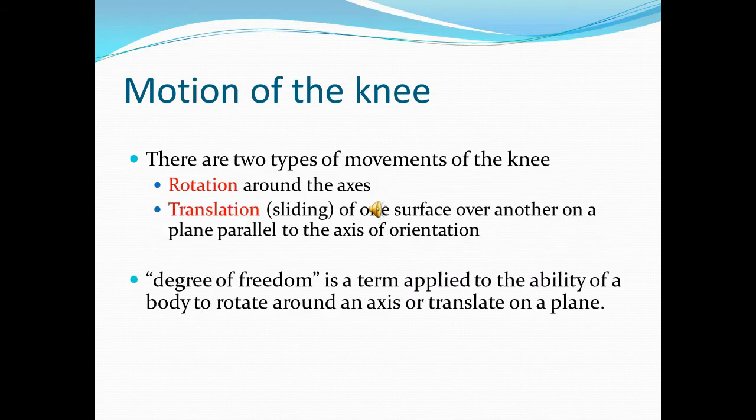There are two types of movements of the knee: rotation around the axis, and translation, or sliding of one surface over another on a plane parallel to the axis of orientation. Degree of freedom is a term applied to the ability of a body to rotate around an axis or translate on a plane.